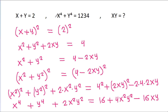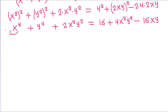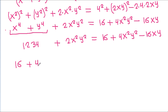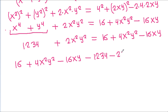We have x power 4 plus y power 4 is equal to 234. So substituting: 234 plus 2xy squared is equal to 16 plus 4xy squared minus 16xy. Rearranging: 16 minus 234 minus 2xy squared plus 4xy squared minus 16xy is equal to 0.